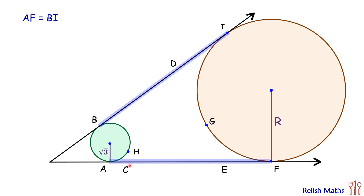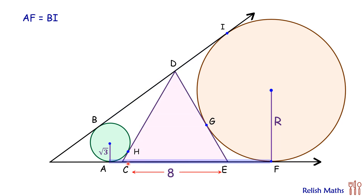Let's start with length AF first. AF is AC plus CE plus EF, and CE is 8 centimeters. Now we'll find the value of AC and EF. Let's start with the value of EF first.